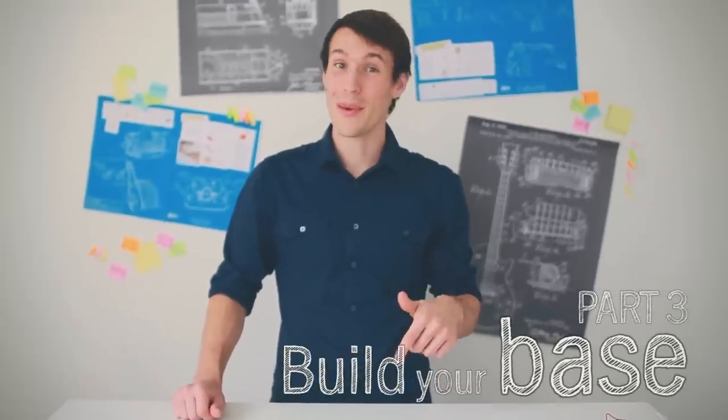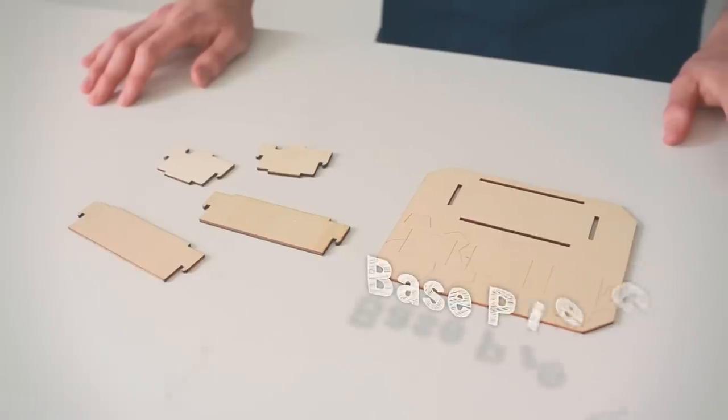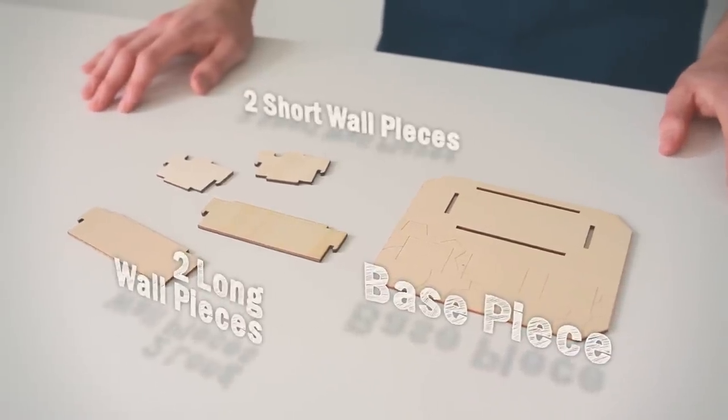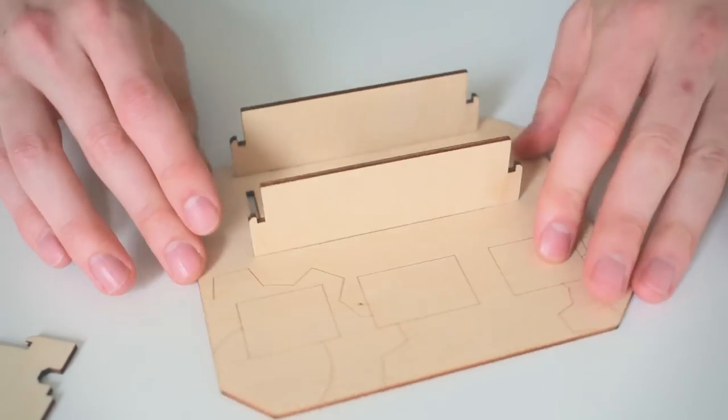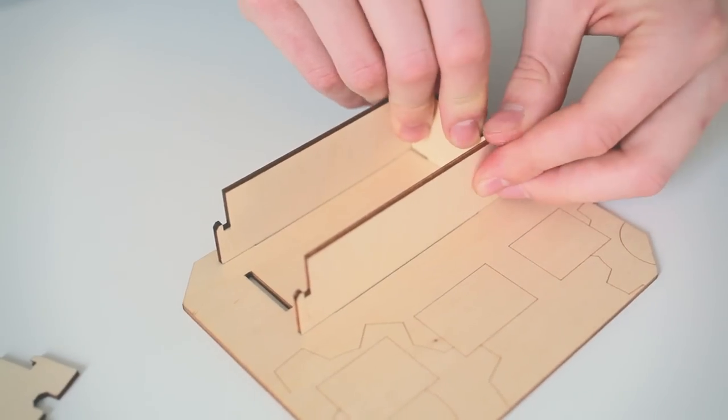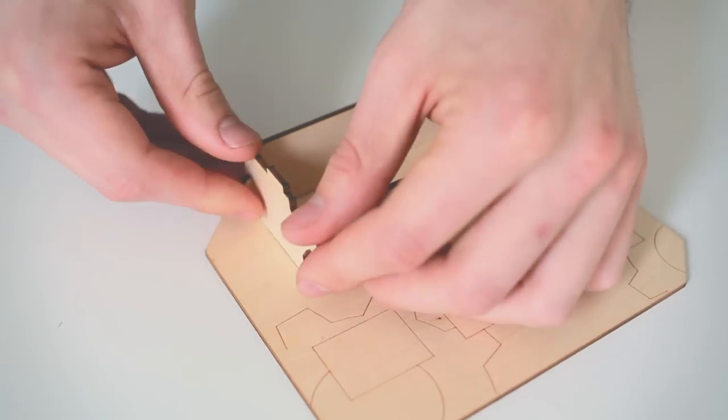Next you're going to put together your motor base. For this you'll need the base plate, two long wall pieces, and two short pieces. Take your two long wall pieces and slot them into your base. Then take the short pieces and slot them on top of the long pieces.